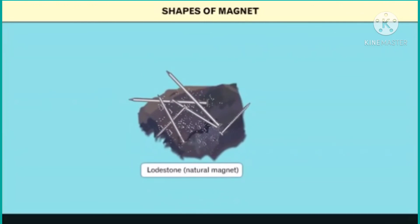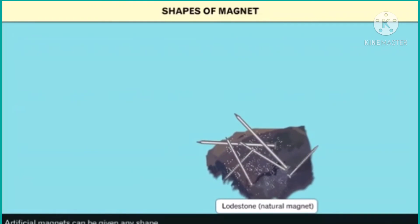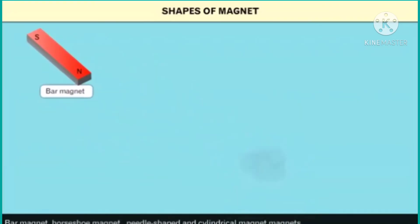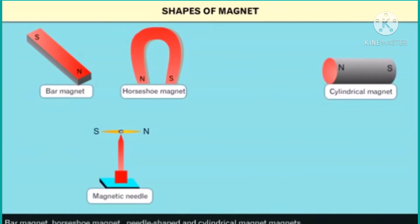Shapes of magnets: Lodestone is a natural magnet and it has an irregular shape. On the other hand, artificial magnets can be given any shape. Different shapes of artificial magnets are: bar magnet, horseshoe magnet, needle magnet, and cylindrical magnet.